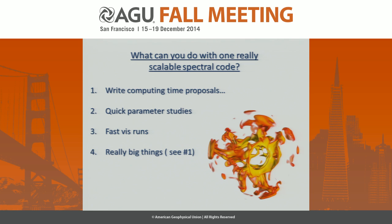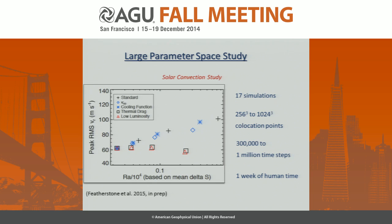This is an example from the ASH code when I applied these principles. I got antsy over Christmas vacation — sleeping in my parents' attic in North Carolina — and did a parameter space study. In about a week I was able to do 17 different simulations of a solar convection zone, ranging from 256 cubed to 1024 cubed collocation points. You can do things very quickly when you can run small cases rapidly.